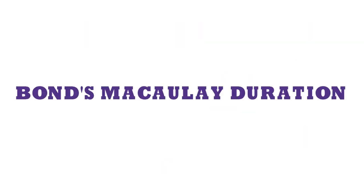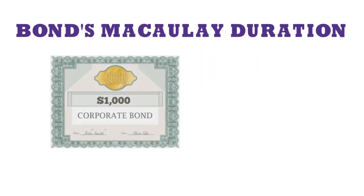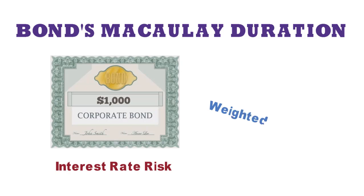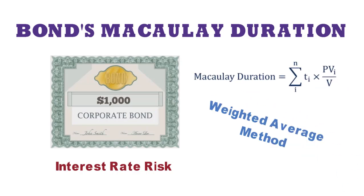In this video I will explain what Macaulay's duration is and its calculation using weighted average times to each coupon payment. Macaulay's duration equals the weighted average of the times to each coupon or principal payment made by the bond. The weight applied to each time to payment should be related to the importance of that payment to the value of the bond. The weighted average formula looks like this.